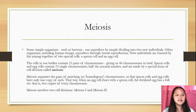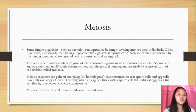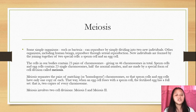Meiosis: Some simple organisms such as bacteria can reproduce by simply dividing into two new individuals. Other organisms, including human beings, reproduce through sexual reproduction. New individuals are formed by the joining together of two special cells, a sperm cell and an egg cell.